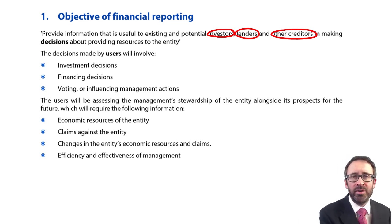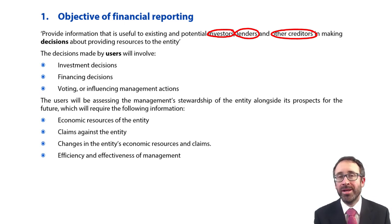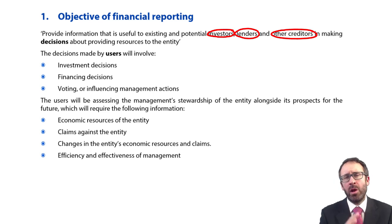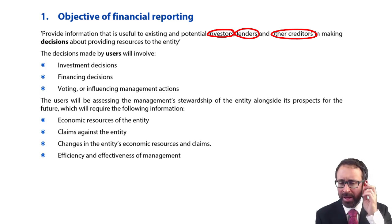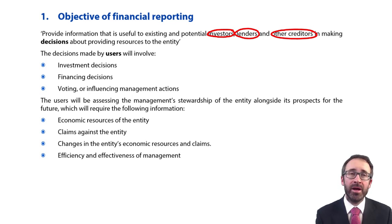The investors get dividends out of the profits — that's what they're invested in. The lenders and other creditors want their cash back; they want to look at the liquidity, the amount of cash the business has, and where that liquidity sits with regards to the assets. Is all the cash tied up in inventory? That could be quite risky. So they're looking at the investment decisions, the financing decisions, and also the influence on what management do.